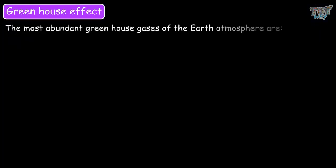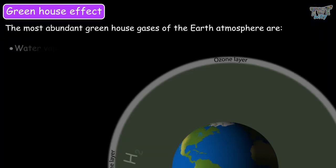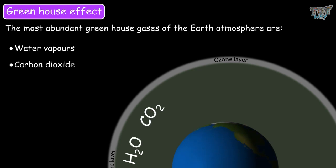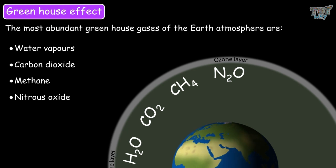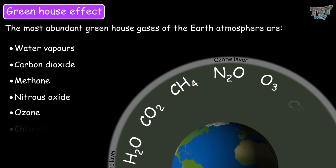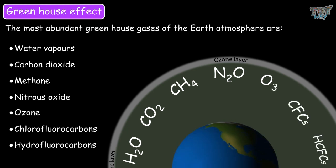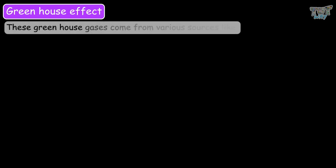The most abundant greenhouse gases are water vapor, carbon dioxide, methane, nitrous oxide, ozone, chlorofluorocarbons, and hydrofluorocarbons. These greenhouse gases come from various sources,